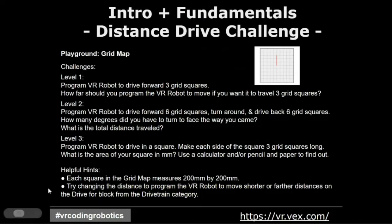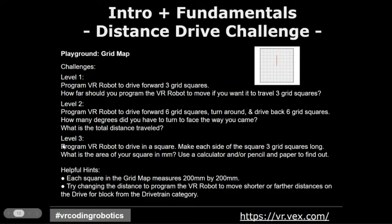This is the first challenge we're going to look at today, and we're going to do this one together. We're going to use the grid map playground. Level one is moving the robot forward by three grid squares. Level two is programming the VR robot to drive forward six squares, turn around, and drive back six squares. The further challenge is programming the VR robot to drive in a square three grid squares long. We're going to do levels one and two together so you can see what the platform looks like.